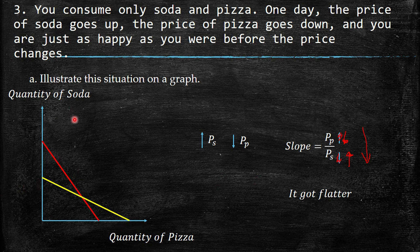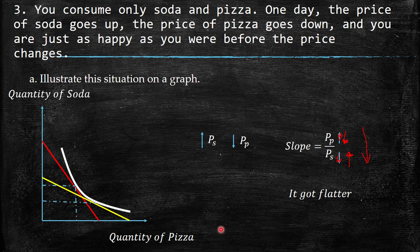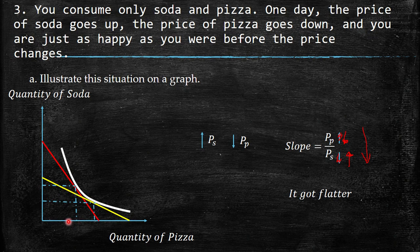Imagine the first situation — you consume bundle A. Now you consume bundle B on the new, flatter budget constraint. As you can see, you are still on the same indifference curve, so you are just as happy as before the price changes. This is like a compensation — even though there is an increase in the price of soda, it is compensated by the decrease in the price of pizza.